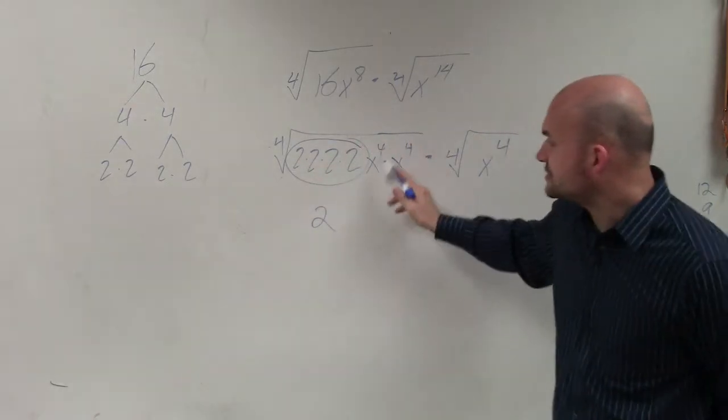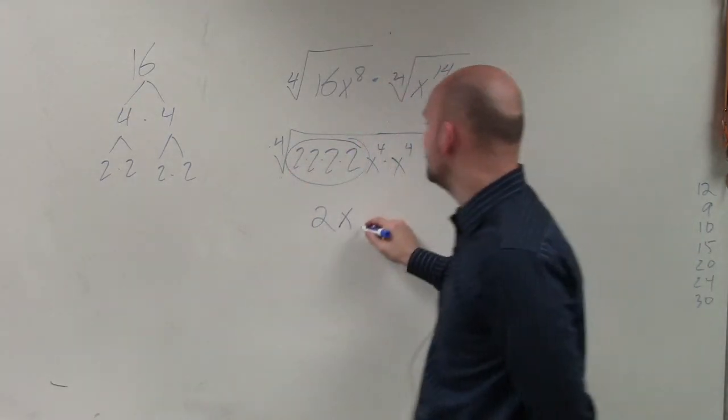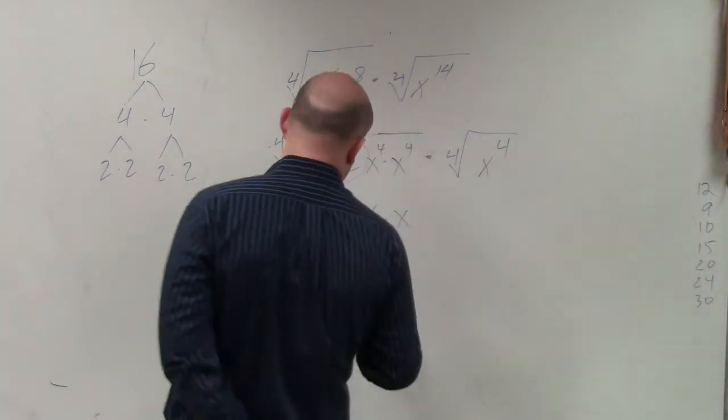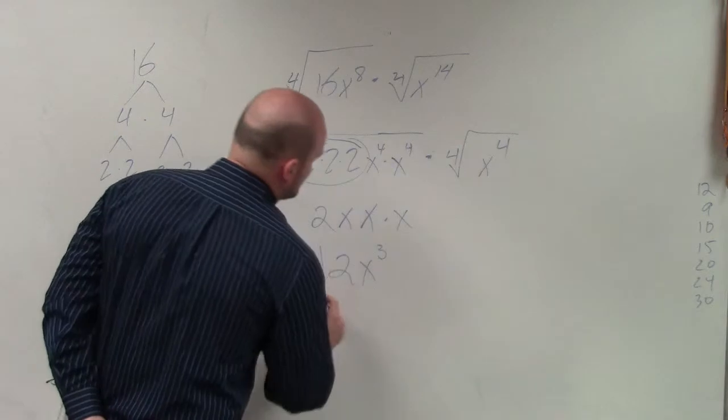The fourth root of x to the fourth is just x. The fourth root of x to the fourth is just x. And the fourth root of x to the fourth again is just x. So my final answer is 2x cubed.